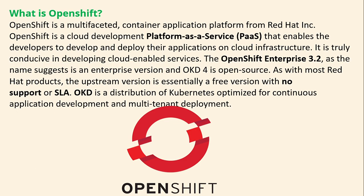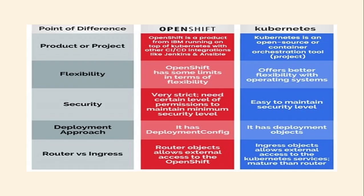What is OpenShift? OpenShift is a multi-phase container application platform from Red Hat. It is a cloud development Platform-as-a-Service that enables developers to develop and deploy their applications on cloud infrastructure. OpenShift Enterprise 3.2 is an enterprise version, while OKD4 is the open source version — a free distribution with no support or SLA. OKD is a distribution of Kubernetes optimized for continuous application development and multi-tenant deployment.